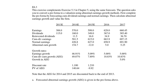In this question, you are given two types of information. The first one is the forecast earnings, and the second one is forecast dividends for five years. You are also given that the required rate of return R is equal to 10%.